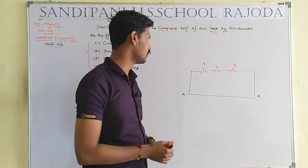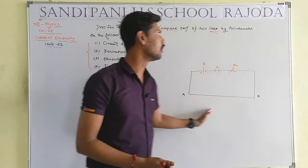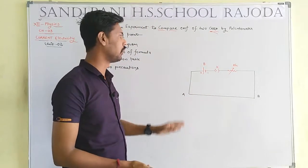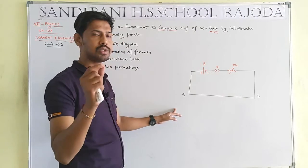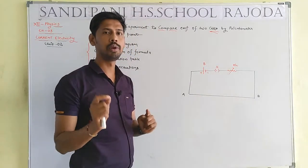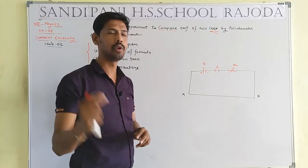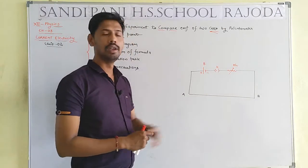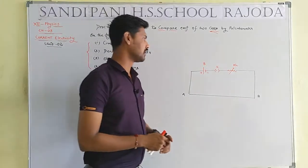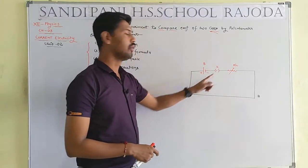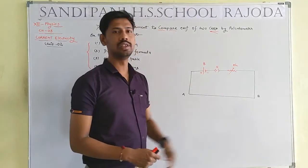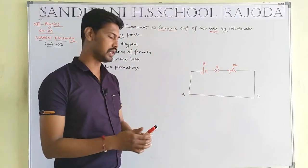So these components are known as the potentiometer: potentiometer wire (insulated copper wire of length one meter = 100 cm), lead accumulator (external battery), one-way key K, and RH (resistance).